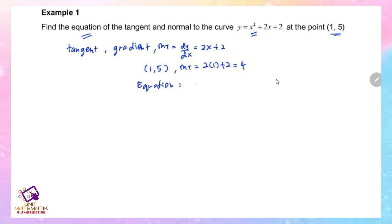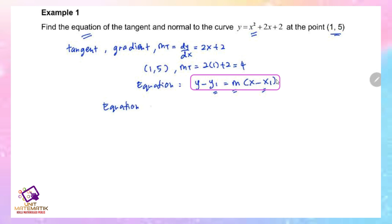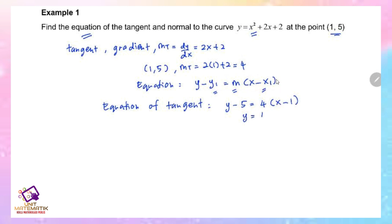Substituting into y - y1 = mt(x - x1): y - 5 = 4(x - 1). Simplifying: y = 4x - 4 + 5, so the equation of the tangent is y = 4x + 1.